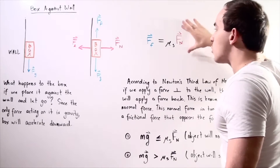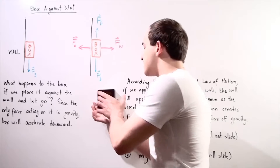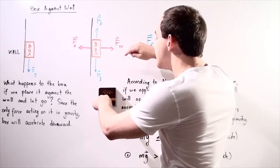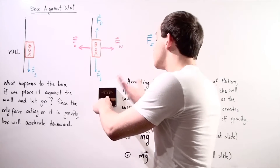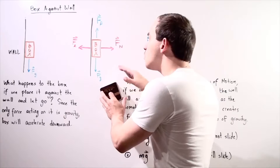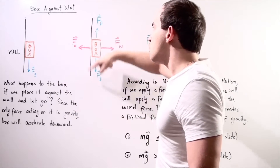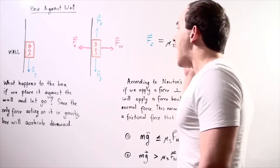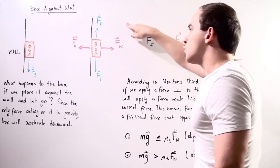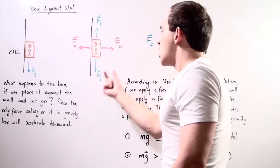So a normal force must exist for this frictional force to exist, and in fact a normal force does exist in this example. When I apply a force perpendicular to my wall, according to Newton's third law of motion, the wall exerts a force back on my box. This is known as the normal force. I apply a force on my box in one direction, and the wall applies a reaction force backwards with the same exact magnitude — that is my normal force.